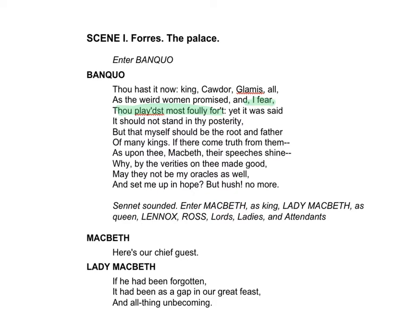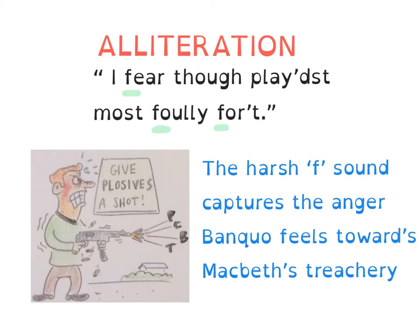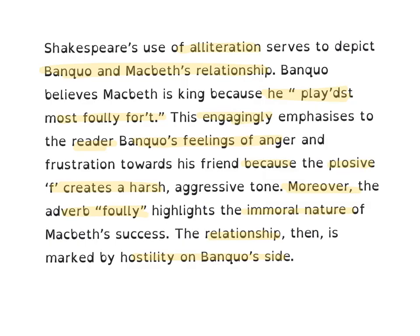The second detail from this extract I'm going to lock in on — in terms of exposing or presenting the relationship between the two men — is this line from Banquo: 'I fear thou played most foully for it.' In other words, he suspects Macbeth of the regicide. The technique I'm going to explore here is alliteration — the fear-foully thought. And what I'm going to say is that the effect of that F sound is to create a kind of harsh tone. At GCSE, sounds like F, P, C, T, and B — you can call them spitting words, but I think you can collectively refer to them as plosives. So maybe in my response I'll use that word: plosives. Just a harsh sound — and what that's doing is capturing Banquo's anger and frustration towards Macbeth's treachery.